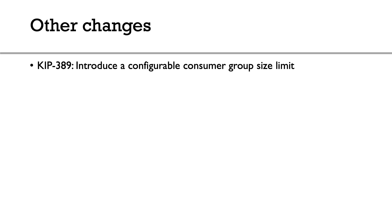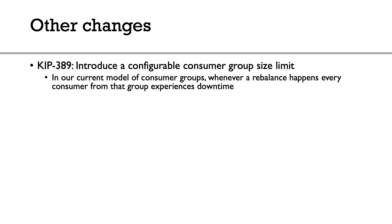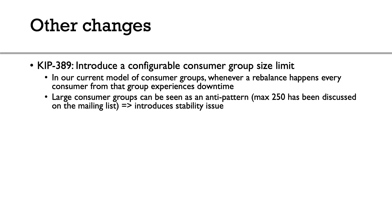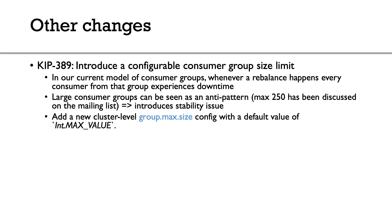KIP 389 introduces a configurable consumer group size limit. If you have too many consumers — say over 250 — then whenever one consumer joins or leaves, there's a huge rebalance. Kafka recommends keeping your consumer group under a defined size. You can now set a new configuration called group.max.size, which defaults to infinite to not impact old behavior, but you should set it to a reasonable value like 250, to make sure your consumer groups don't get too big and you still get good stability.